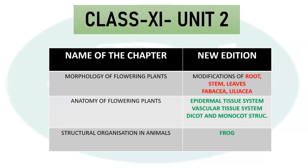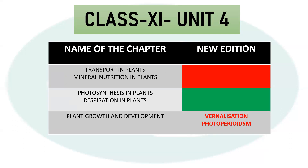Unit 3 covers Cell, Organelles, Cell Cycle, and Biomolecules — 3 chapters with no change at all. Coming to Plant Physiology, Unit 4, there is a lot to cover. Transport in Plants and Mineral Nutrition — these 2 chapters we will read completely.